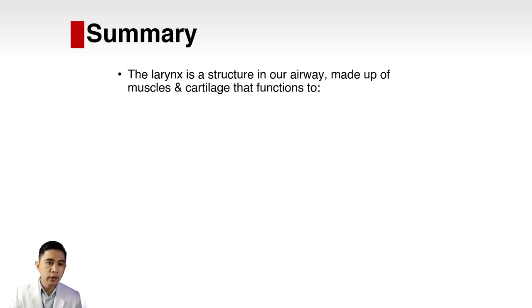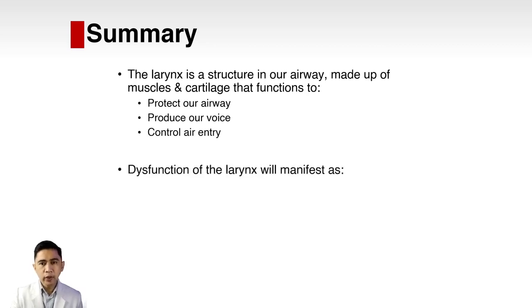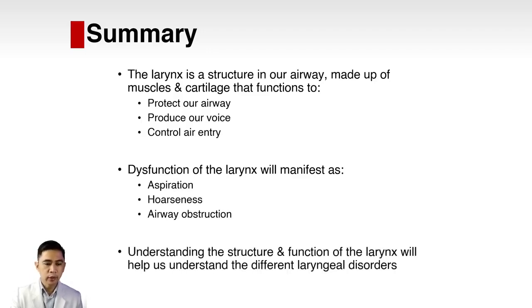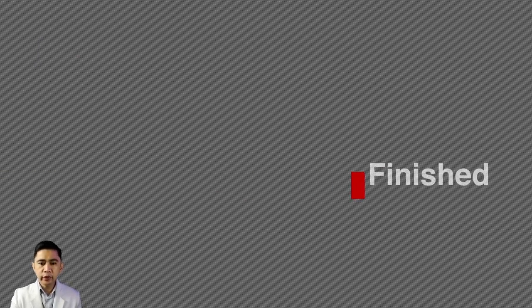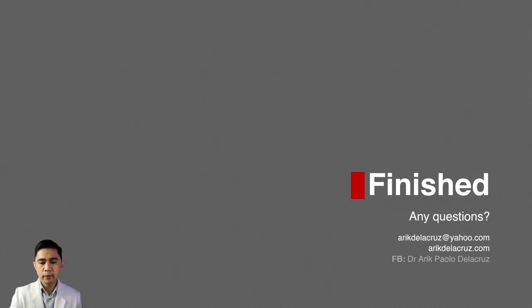In summary, the larynx is a structure in our airway made up of muscles and cartilages that functions to protect our airway, produce our voice, and control air entry. Dysfunction of these functions manifests as aspiration, hoarseness, and airway obstruction. Understanding the structure and function of the larynx helps us understand the different laryngeal disorders. Thank you.